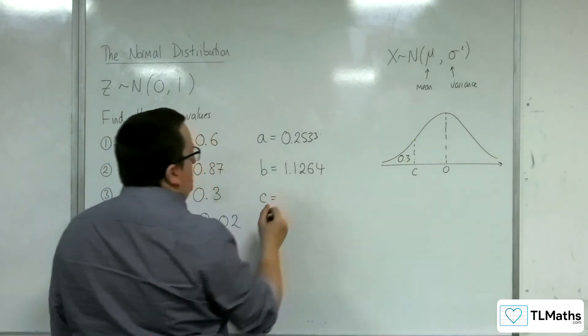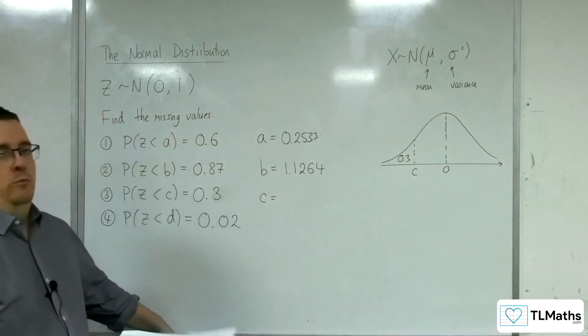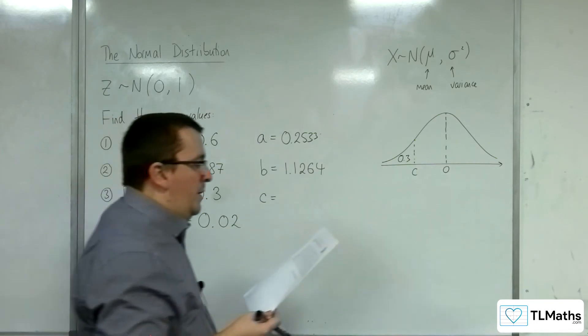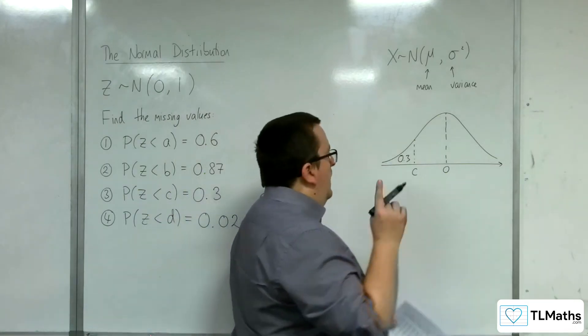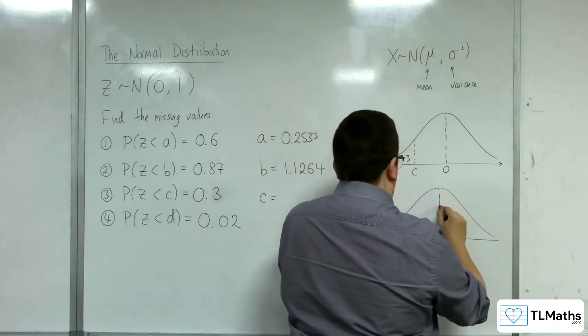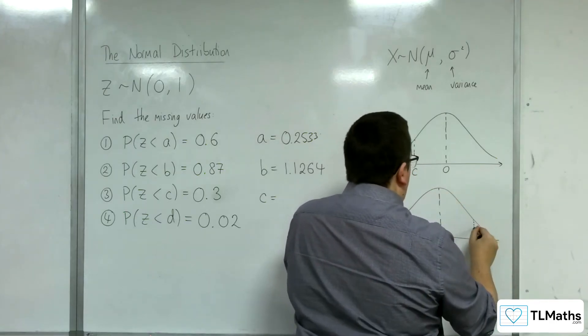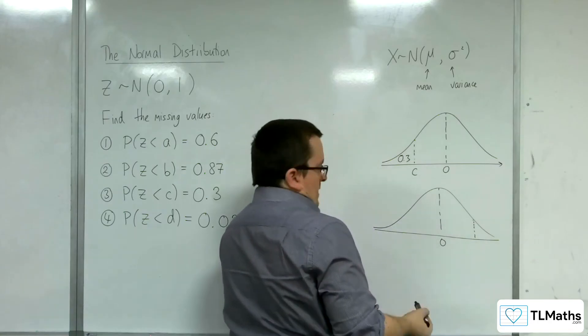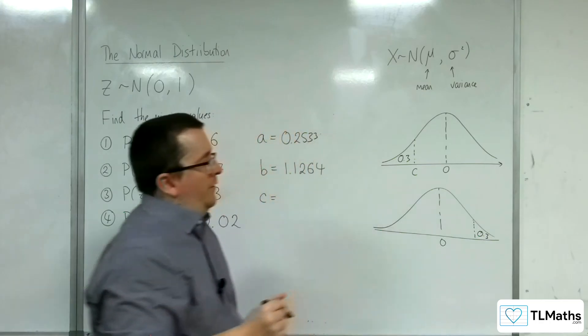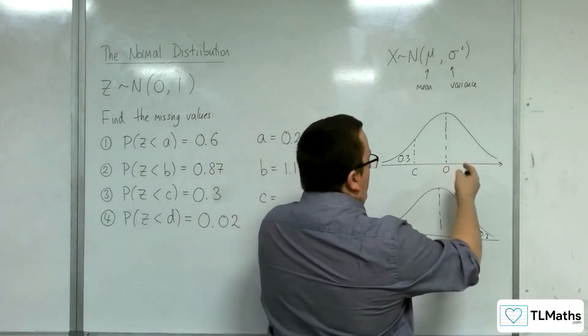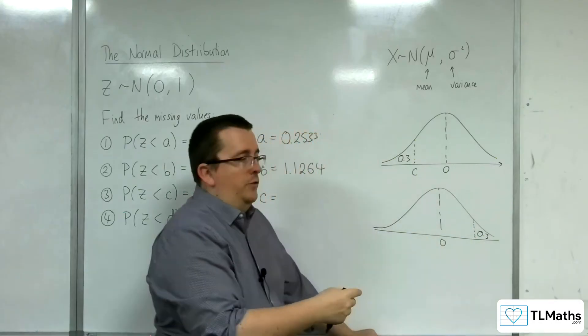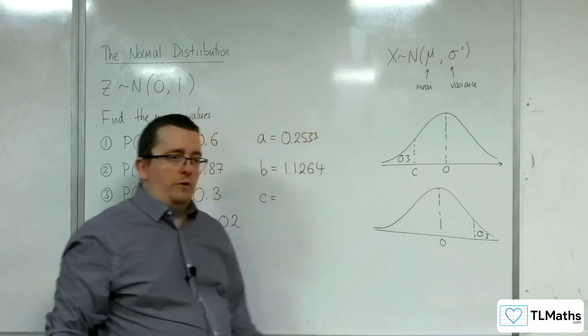Right. Now, the problem is that my tables don't go up to 0.3. However, what I can do is I could look at the corresponding value over here, in order for that to be 0.3. Because of the symmetry of the curve, if I know this value, then I can work out the opposing value. So, if that's 5, then that would be minus 5, for example.